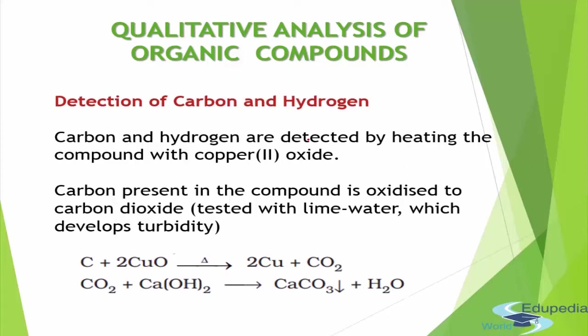First, let's proceed with detection of carbon and hydrogen. The method is very simple - we take a sample of the organic compound and heat it in the presence of copper oxide. Copper oxide acts as a catalyst and will oxidize the carbon present in the compound to carbon dioxide. We then need to run a test to confirm whether the gas formed is carbon dioxide or not.